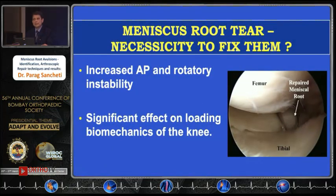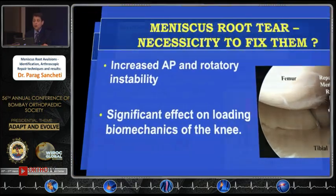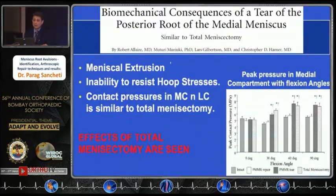It is always necessary when you see a root tear to repair it. If not, we know that it increases AP and rotatory instability. So if you have a concomitant ACL injury, it is highly susceptible to failure. There is significant loading and effect on the biomechanics of the knee leading to osteoarthritis. Research shows that with a meniscal root tear there is always a reduced ability to resist the hoop stresses.